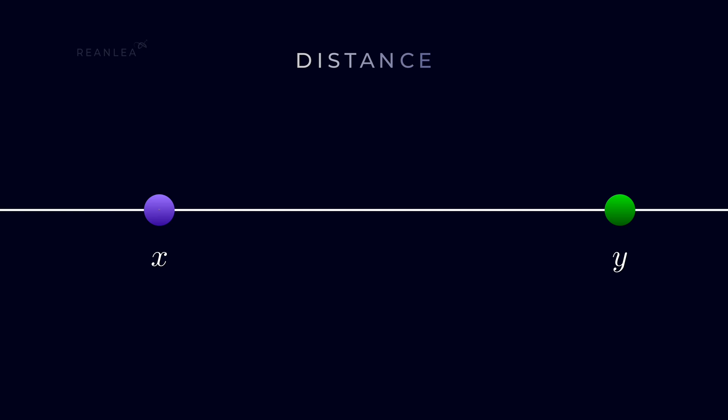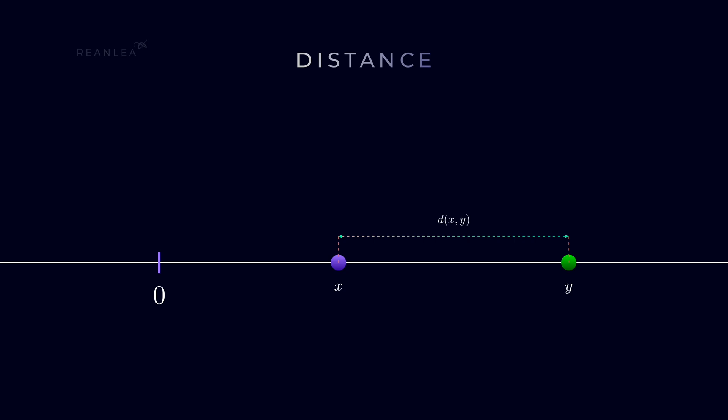Now, what's the distance between x and y? Suppose we represent the distance between x and y as d of xy. And you can see it clearly that it doesn't matter whether we measure it from x to y or y to x. It will simply be the difference between the distances from y to the origin and from x to the origin. Whereas we represent them as d of 0y and d of 0x respectively.